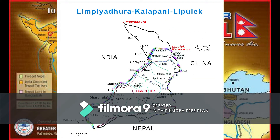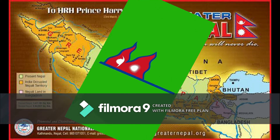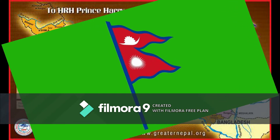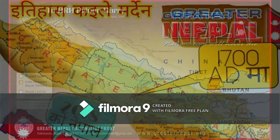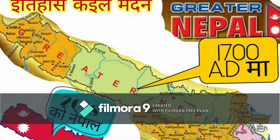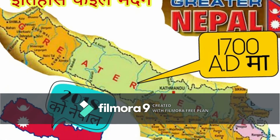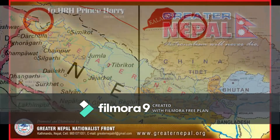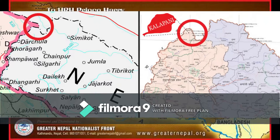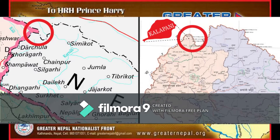The river borders the Nepalese province of Sudurpashchim and the Indian state of Uttarakhand. The Sugauli Treaty, signed by Nepal and British India on March 4, 1816, locates the Kali river as Nepal's western boundary with India.